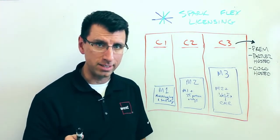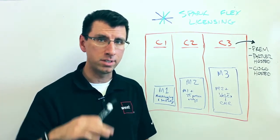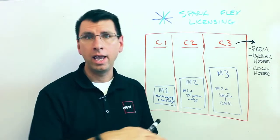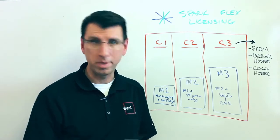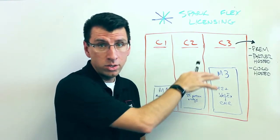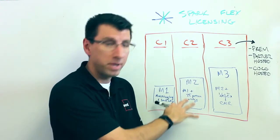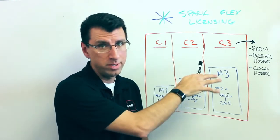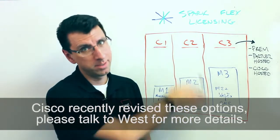Now the cool thing about Spark Flex is it's designed for businesses of 250 users or above, and you count up all of your knowledge workers, basically all of your employees, and then you decide how many of them need what kind of C-SKU or what kind of M-SKU. You've got to pick M's or C's, and you can mix and match between the C's and mix and match between the M's, but you can't mix and match between the two.